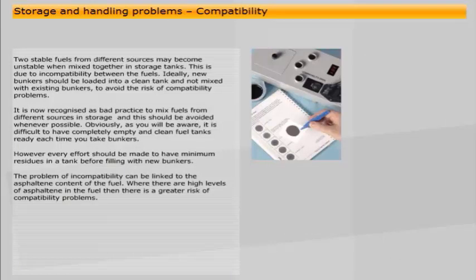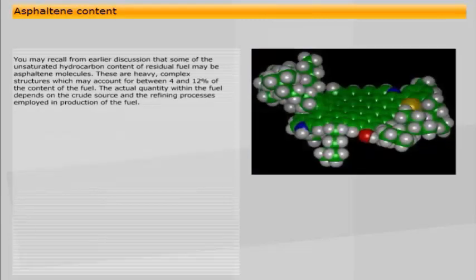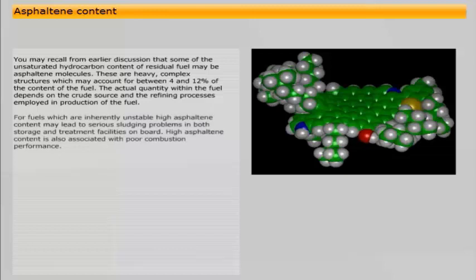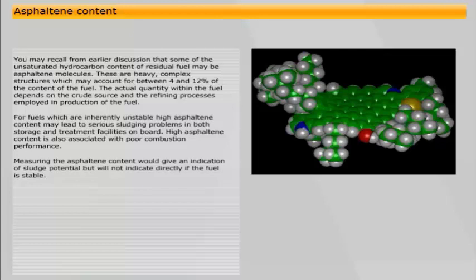The problem of incompatibility can be linked to the asphaltene content of the fuel. Where there are high levels of asphaltene in the fuel, then there is a greater risk of compatibility problems. You may recall from earlier discussion that some of the unsaturated hydrocarbon content of residual fuel may be asphaltene molecules. These are heavy, complex structures which may account for between 4 and 12% of the content of the fuel. The actual quantity within the fuel depends on the crude source and the refining processes employed in production of the fuel. For fuels which are inherently unstable, high asphaltene content may lead to serious sludging problems in both storage and treatment facilities on board. High asphaltene content is also associated with poor combustion performance. Measuring the asphaltene content would give an indication of sludge potential, but will not indicate directly if the fuel is stable.